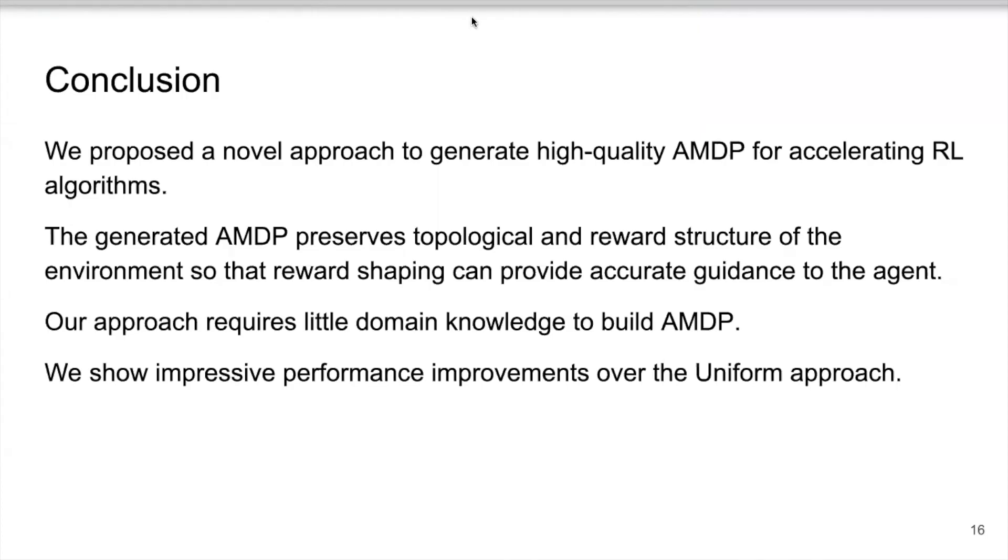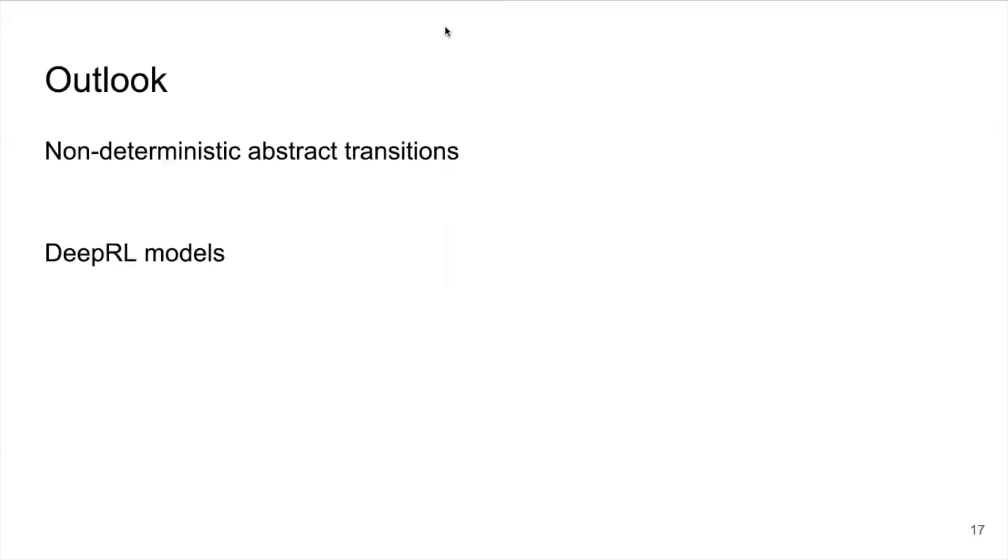In conclusion, we proposed a novel approach to generate high quality AMDP for accelerating reinforcement learning algorithms. The generated AMDP preserves topological and reward structure of the environment so that reward shaping can provide accurate guidance to the agent. At the same time, our approach requires little domain knowledge to build AMDP. In terms of experiment results, we show impressive performance improvements over the uniform approach. Regarding future work, it will be worth doing more experiments for scenarios with non-deterministic abstract transitions, and we would also try to transfer our approach onto deep reinforcement learning models.